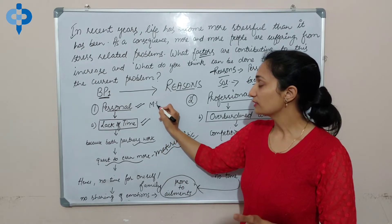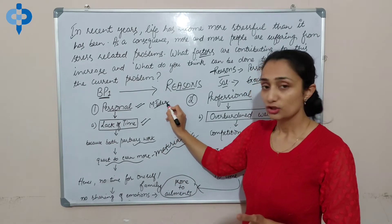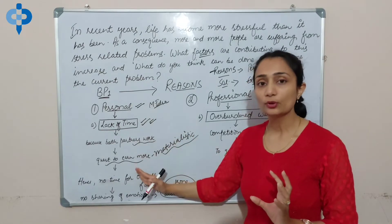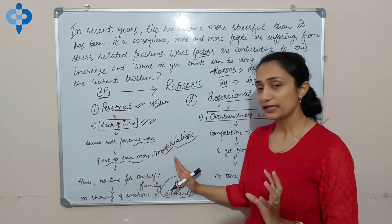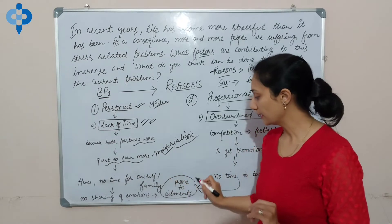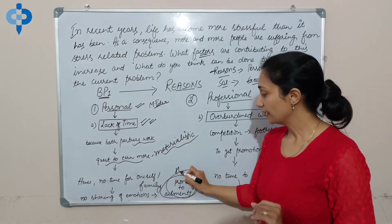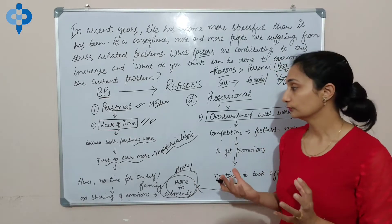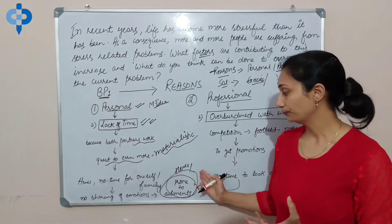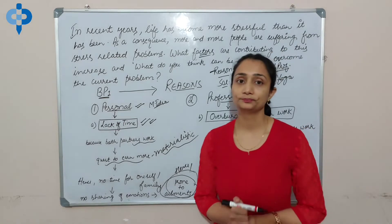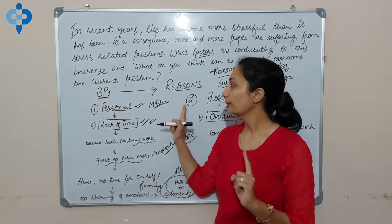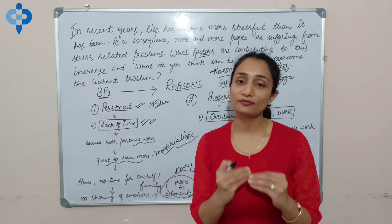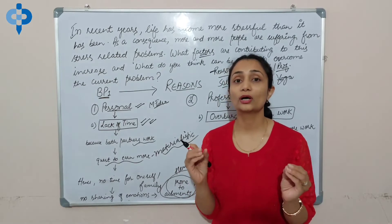We gave the main idea — that was our chief idea. Then we supported it, then we elaborated it. You can also give an example in this. And then we gave a conclusion — 'hence they are becoming,' 'thus,' 'hence,' 'therefore' — I've already explained all these connectors. Becoming prone to ailments. So this was our first point. If you write in this way, definitely there will be no problem.